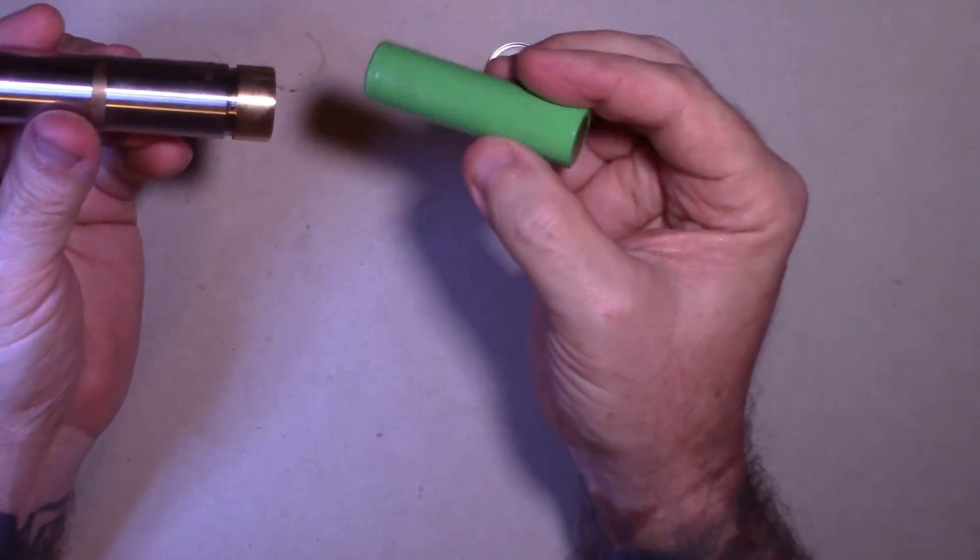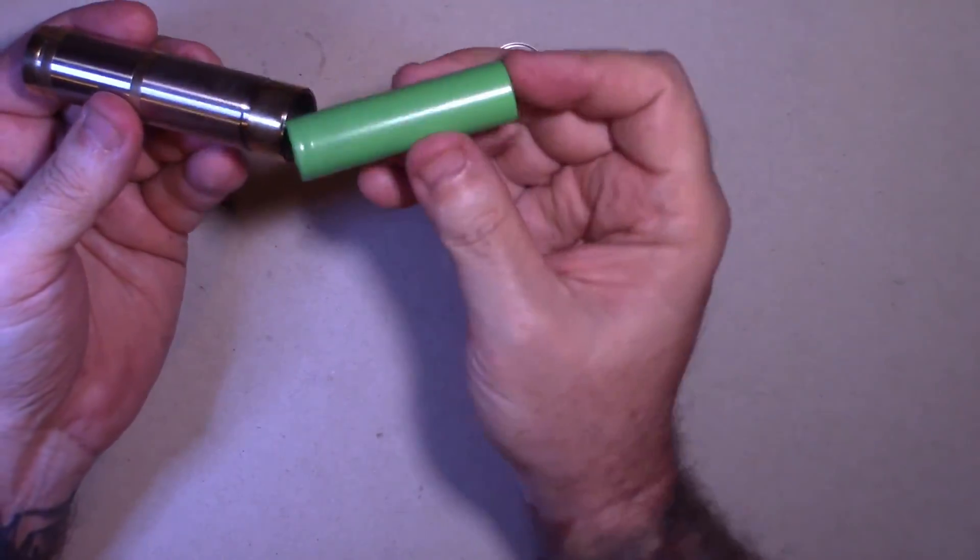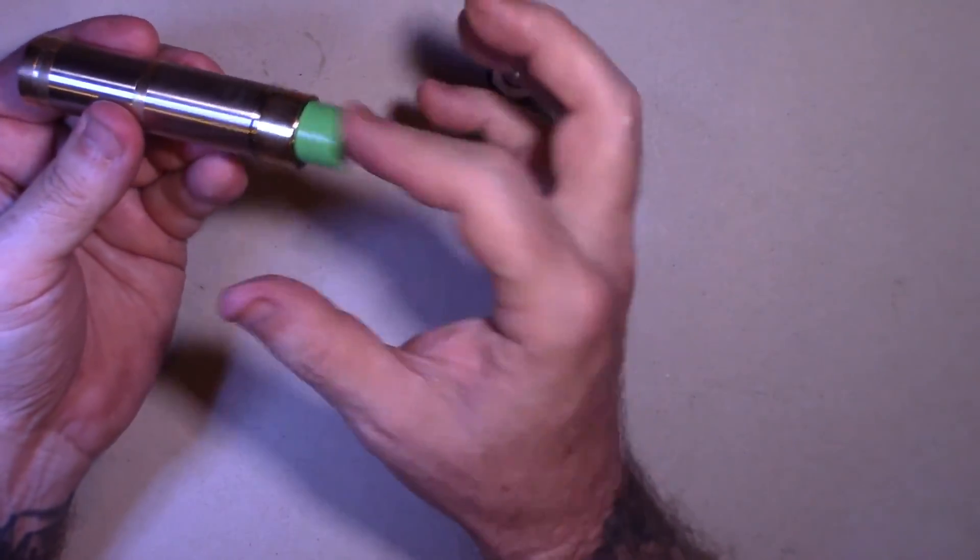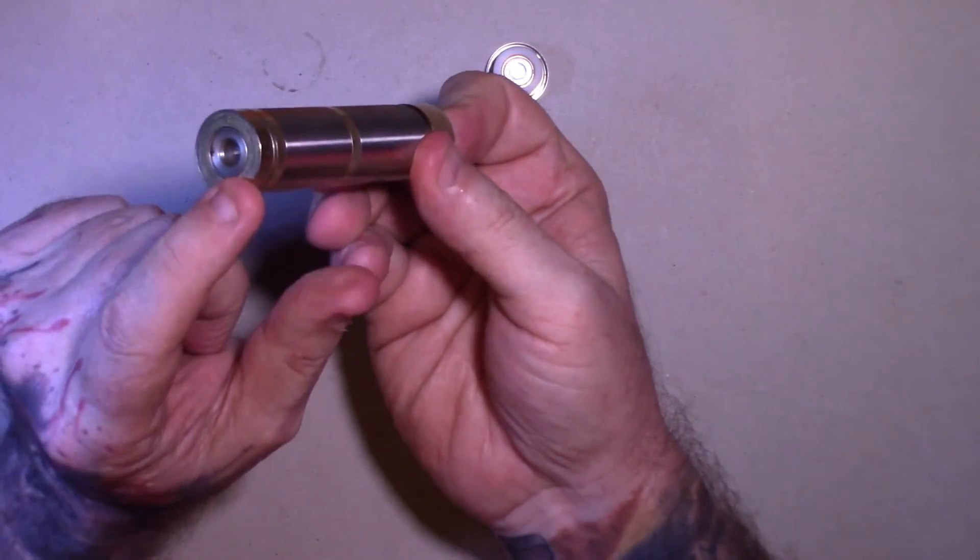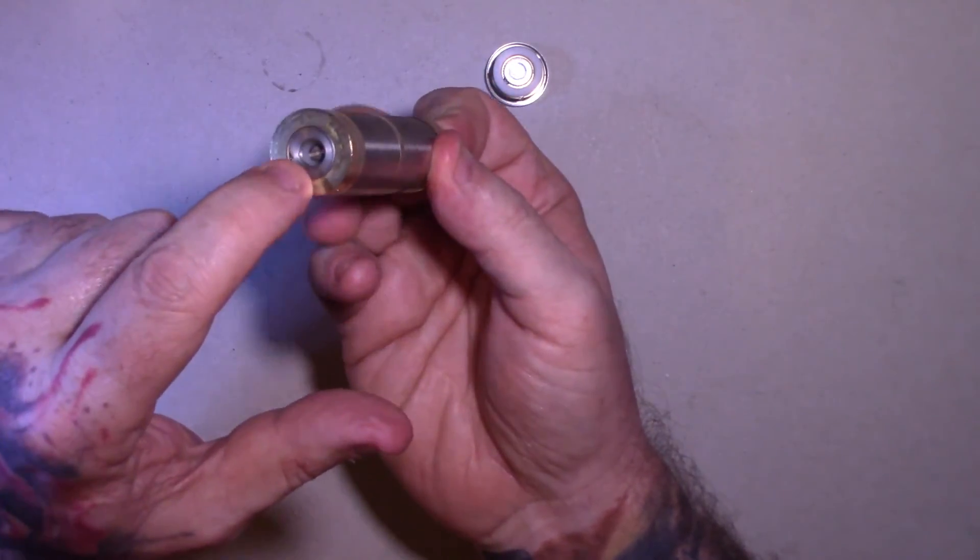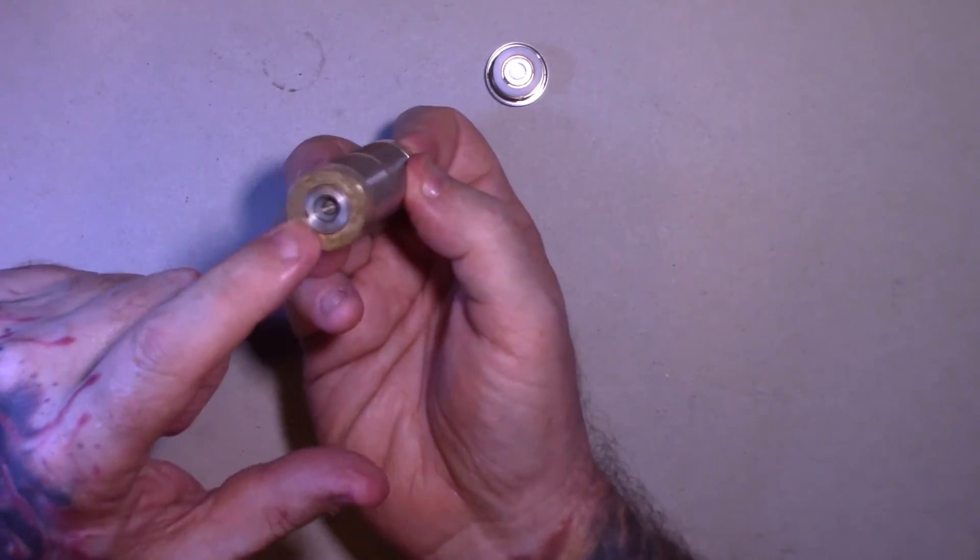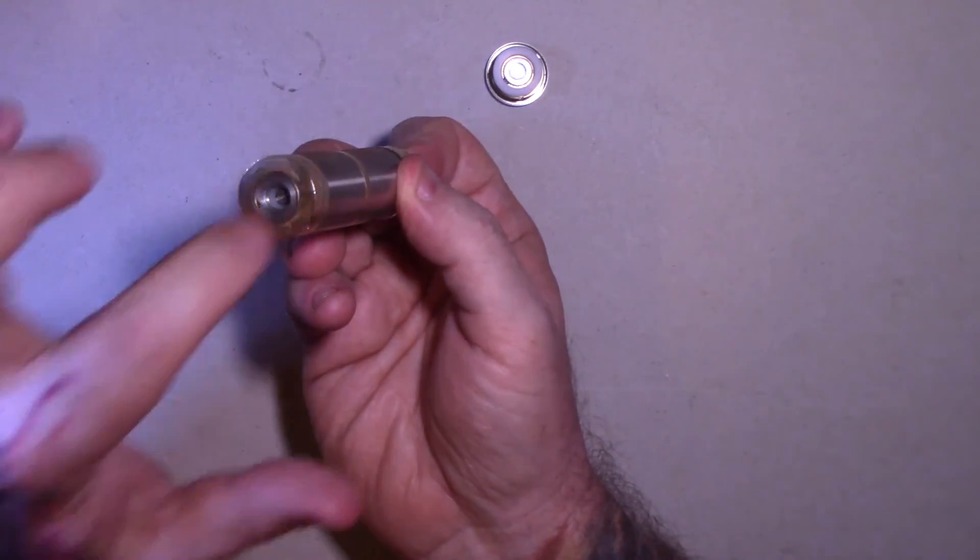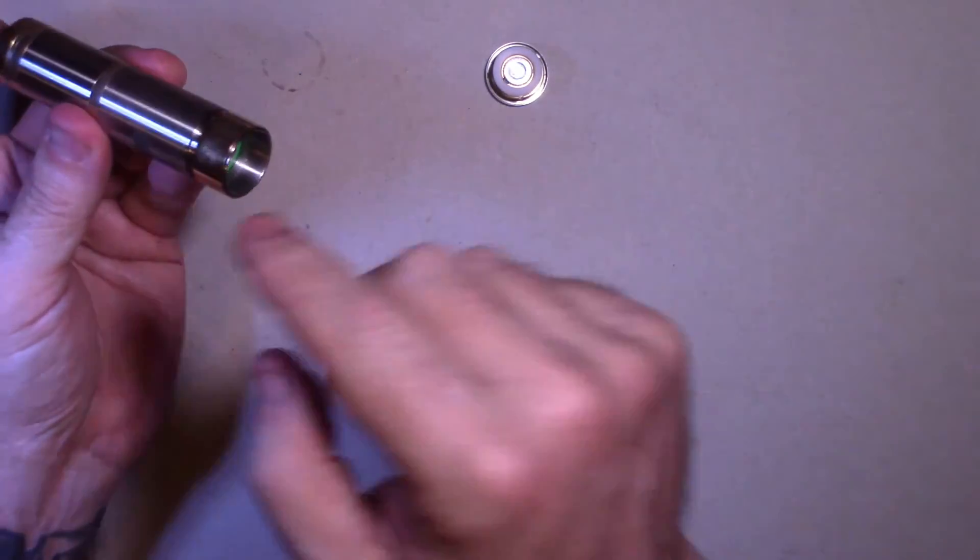All it is is a battery. You put the battery in, positive side up. It goes on the bottom of that connector. Whatever tank or RDA or whatever you put on top of here makes connection, makes connection to the battery.